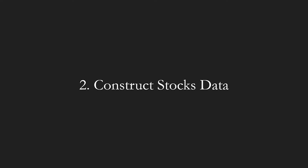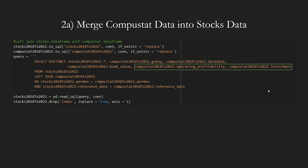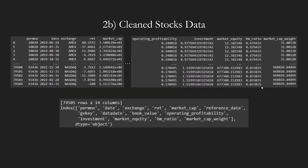Next, we edit the Stocks data code. The only revision is to include the two new columns while left-joining the Stocks data frame with the ComputeStat data frame. Other parts remain the same. This is our new Stocks data, which has two more columns than its three-factor model counterpart.